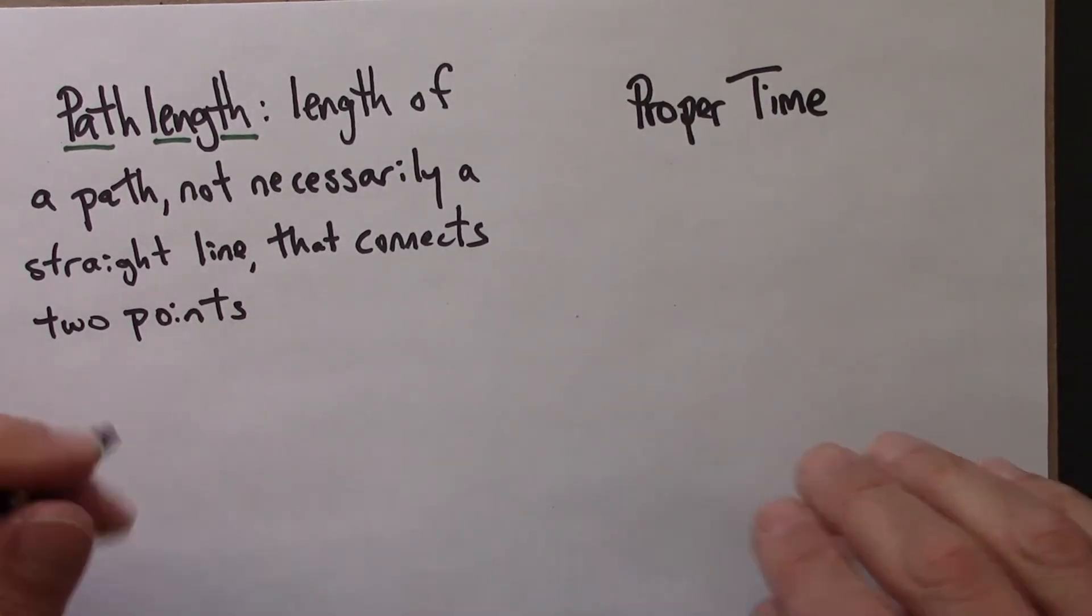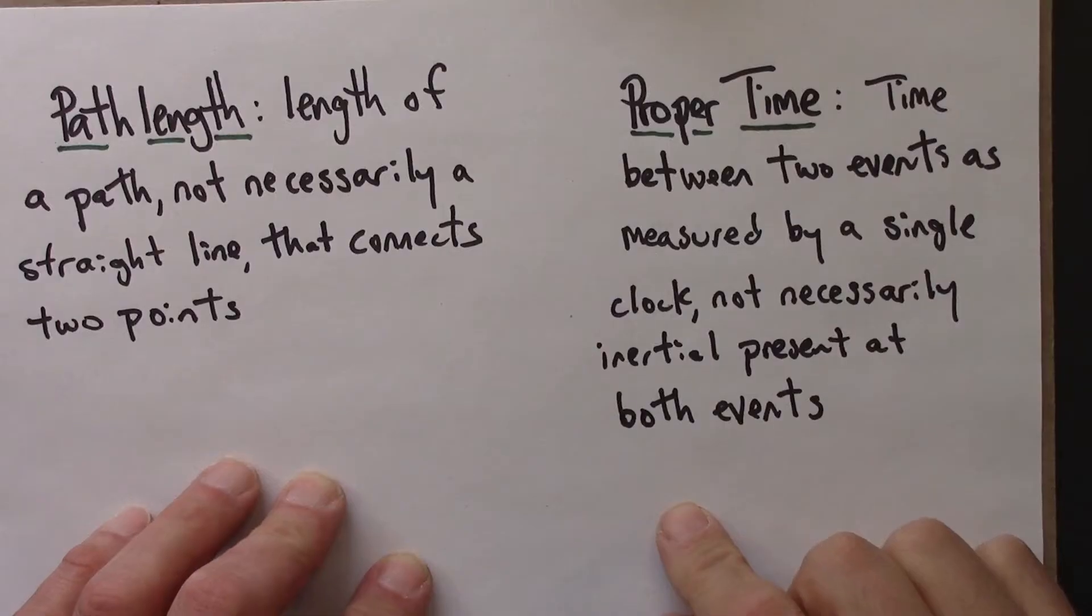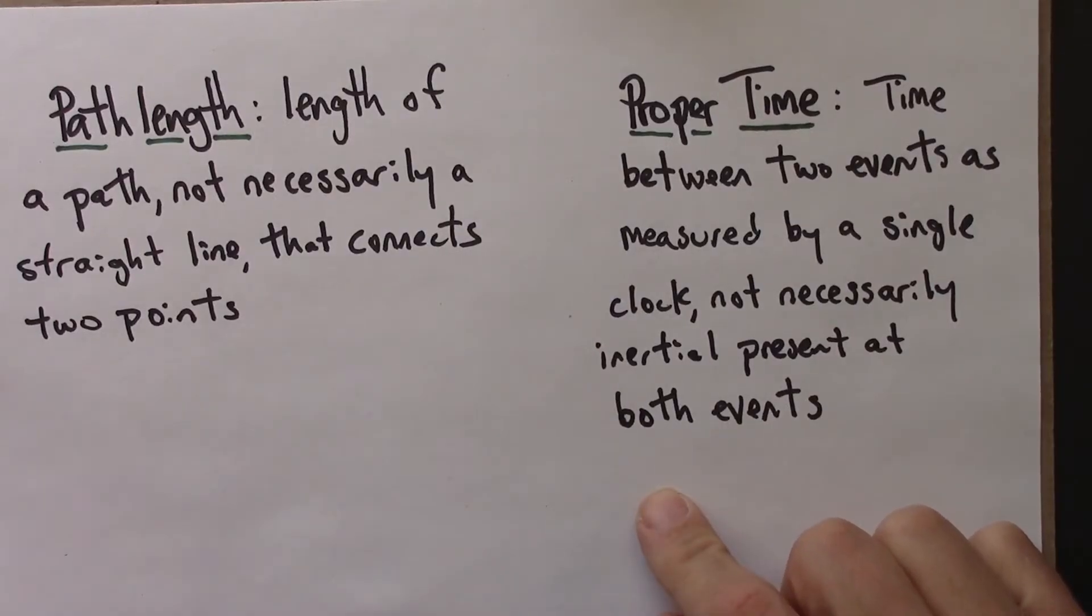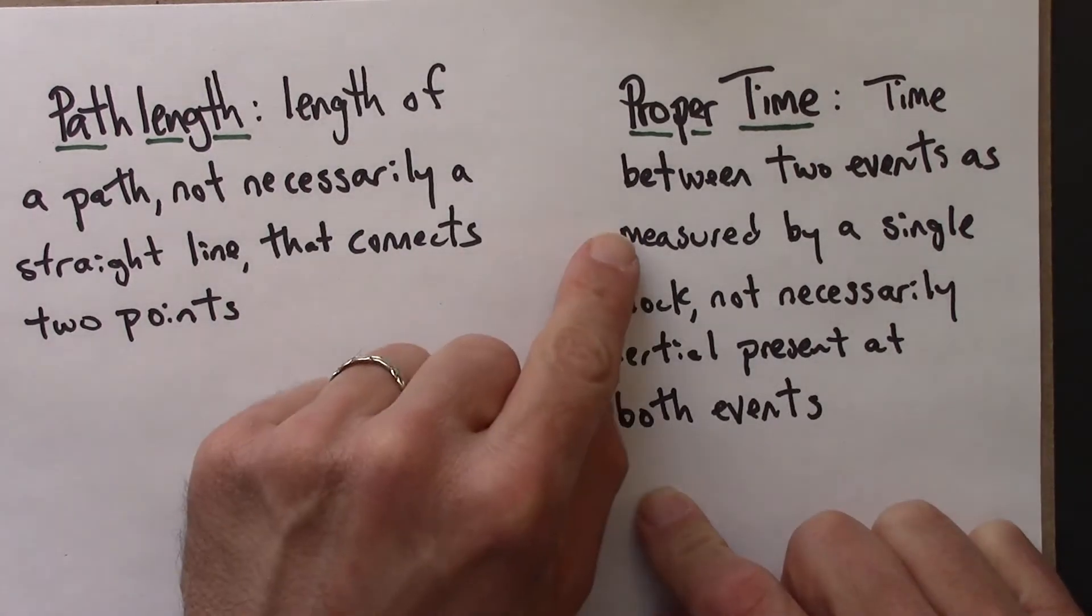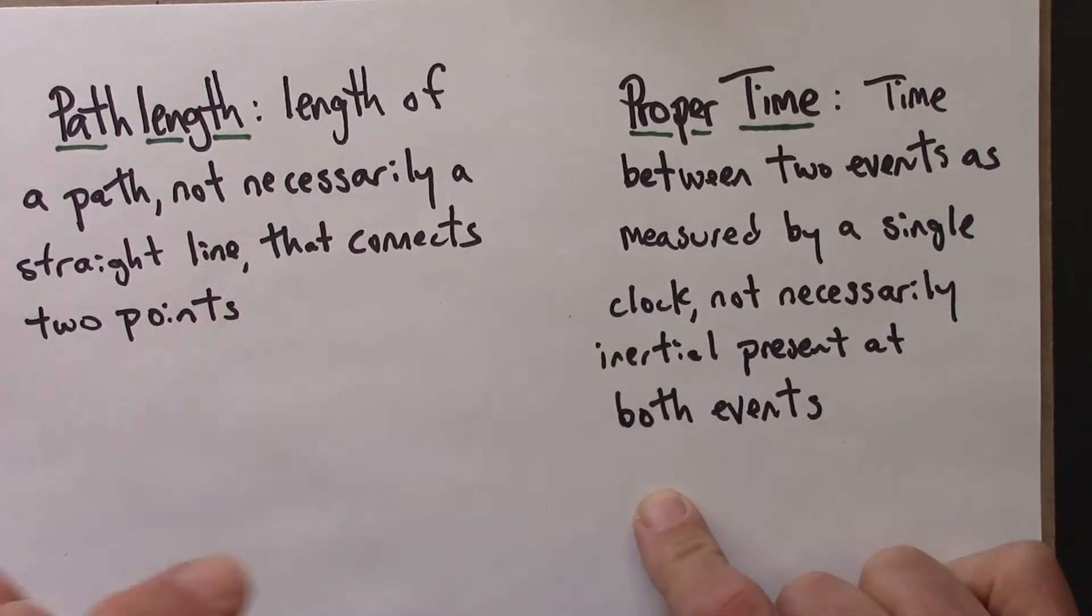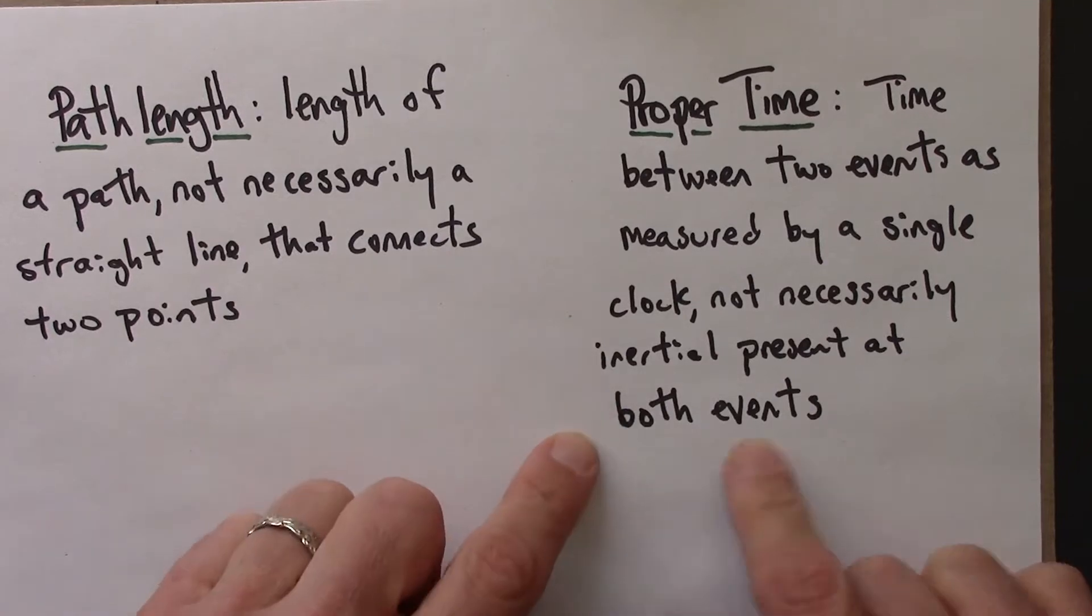So let me write that out. The proper time between two events is the time as measured by a single clock, not necessarily an inertial clock, present at both events.